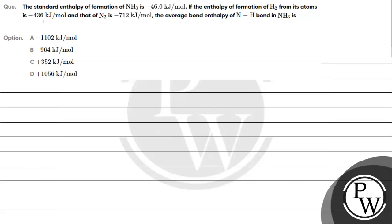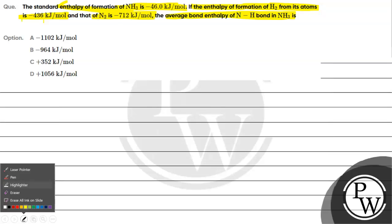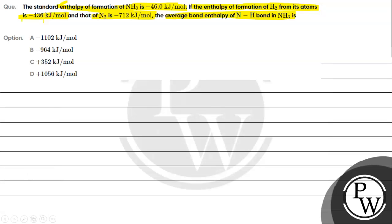Hello, let's read this question. Standard enthalpy of formation of ammonia is minus 46 kJ per mole. The enthalpy of formation of hydrogen from its atom is minus 436 kJ per mole and that of nitrogen is minus 712 kJ per mole. The average bond enthalpy of N-H bond in NH₃ is: Option A: minus 1102 kJ/mol, Option B: minus 964 kJ/mol, Option C: plus 352 kJ/mol, Option D: plus 1056 kJ/mol.